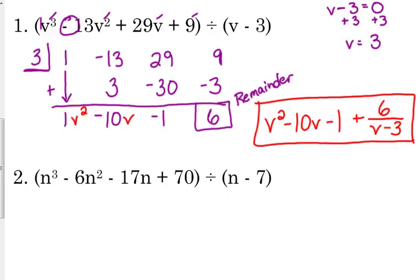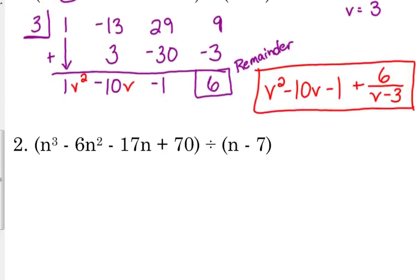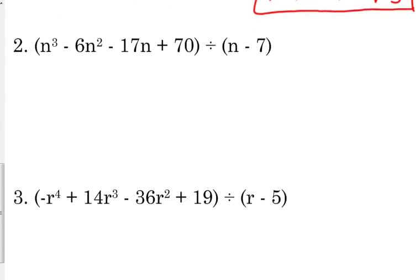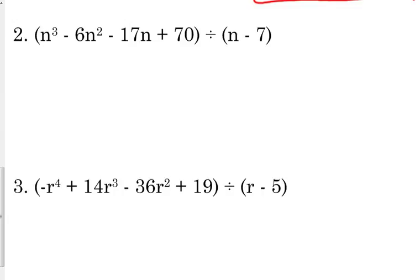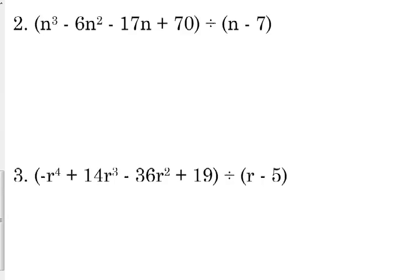Let's look at example number 2. Because I know this is kind of weird. I've never seen anything like this before. I'm going to do several examples for you. Because I saw some of your faces. You were like, what on earth? Set the binomial equal to 0. Solve for the variable. So, add 7 to both sides. So, n equals 7. 7 goes on the shelf.